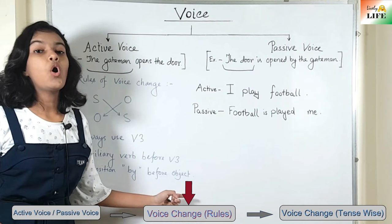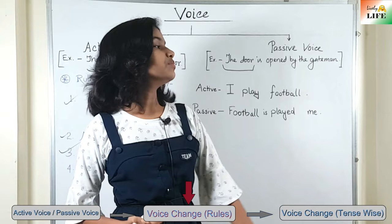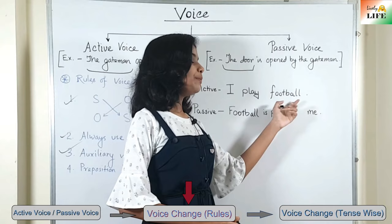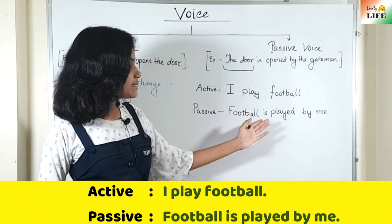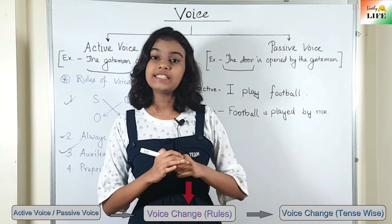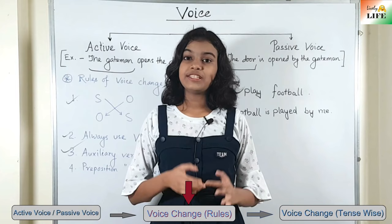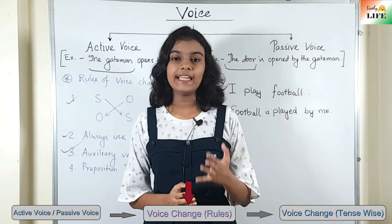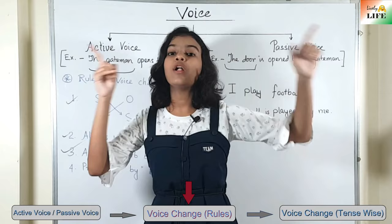The fourth rule: use the preposition 'by' before the object. Generally, we use the preposition 'by' before the object. In this sentence, the object is 'me,' so before 'me' we use 'by.' So the result is: 'Football is played by me.' This is the sentence in passive voice. Every sentence, whatever tense it is in, follows these four simple rules when changing the voice from active to passive. Now, the most difficult part is the change according to tense — we will discuss how to change voice according to all 12 tenses.